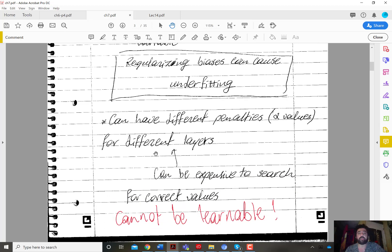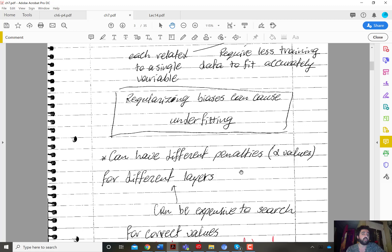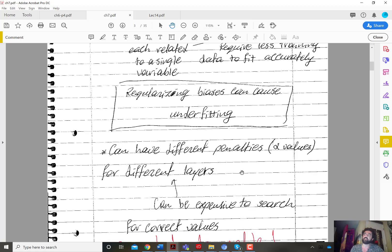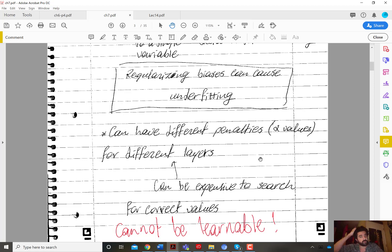So the value of the regularization coefficient could also be different for different layers. In fact, the norm itself can be different for different layers. Now, there is a problem with doing that. It's that it can be very difficult or expensive in terms of trial and error in designing the algorithm to find the correct values or the optimal values or good values for the regularization coefficients. And the problem is that you cannot simply make them learnable.